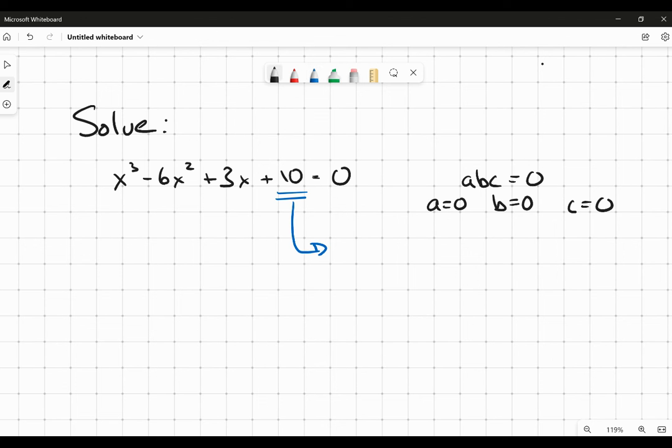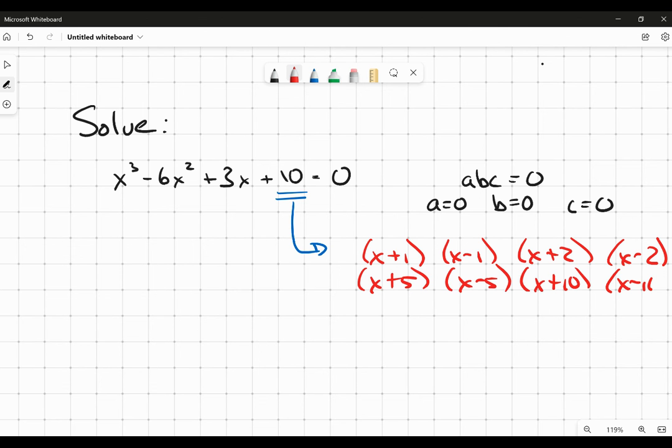Because I know that when I break this apart into linear factors, I'll do it like this. The linear factors, the factors, the constants in all those factors have to be factors of 10. So I'm looking at x plus 1, x minus 1, x plus 2, x minus 2, x plus 5, x minus 5, x plus 10, and x minus 10. These are possible factors for this whole polynomial expression.